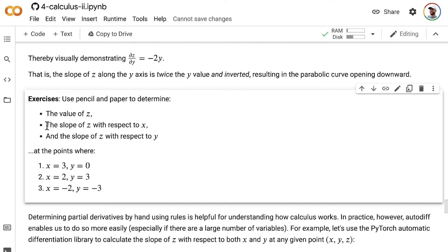So find the value of z and then also find the value of the slope of z with respect to x as well as the slope of z with respect to y. And so do that not only for this point here where x is equal to 3 and y is equal to 0, but also for the second and third points.